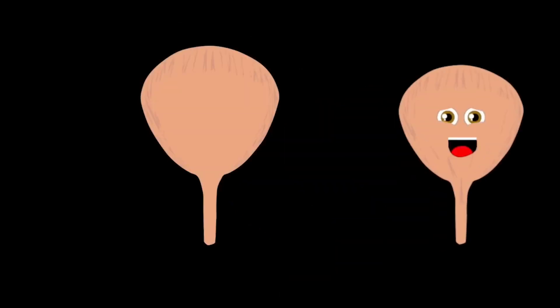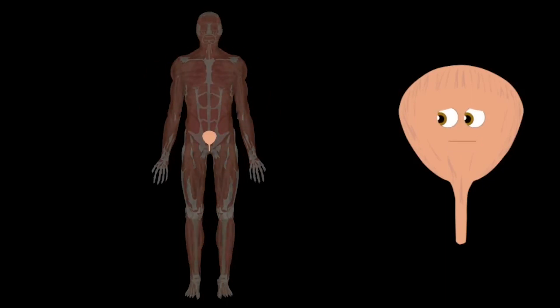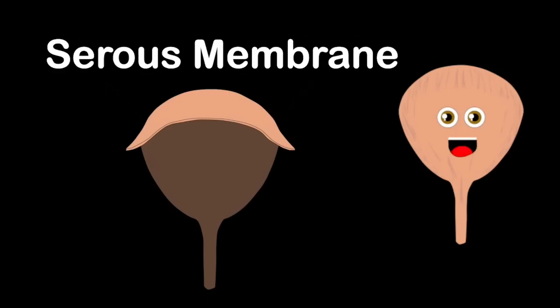Your bladder is the size of a pear when empty and is made of all the parts that you're about to see. Here's a picture of the bladder's anatomy located in the anterior pelvis. The peritoneum covers the upper posterior surface. It's the serous membrane and I'm glad you're learning all this.